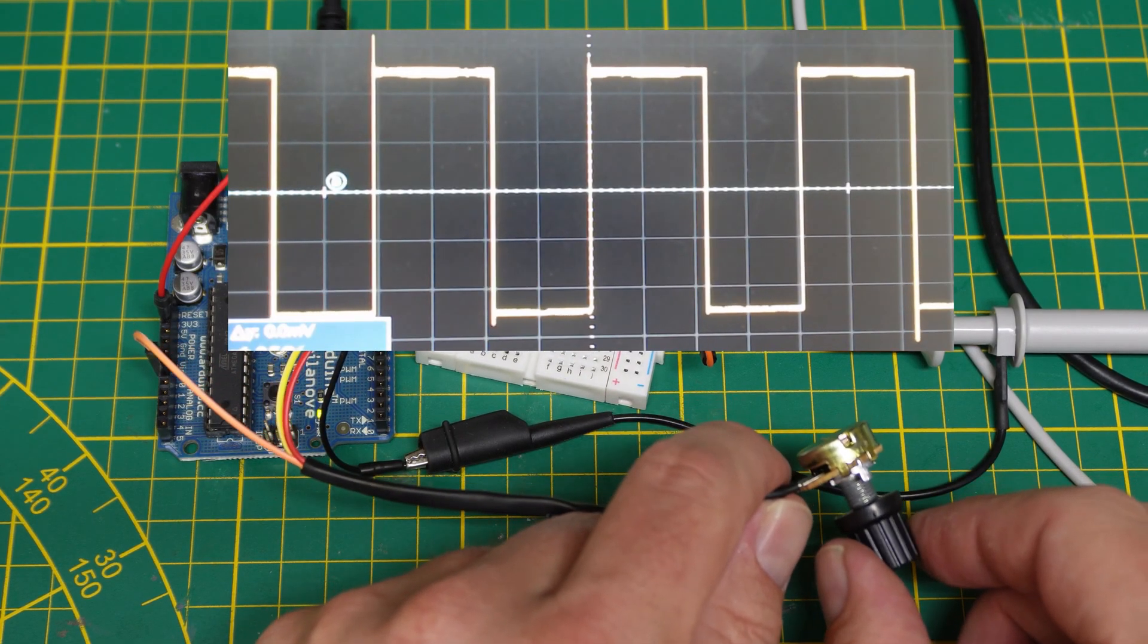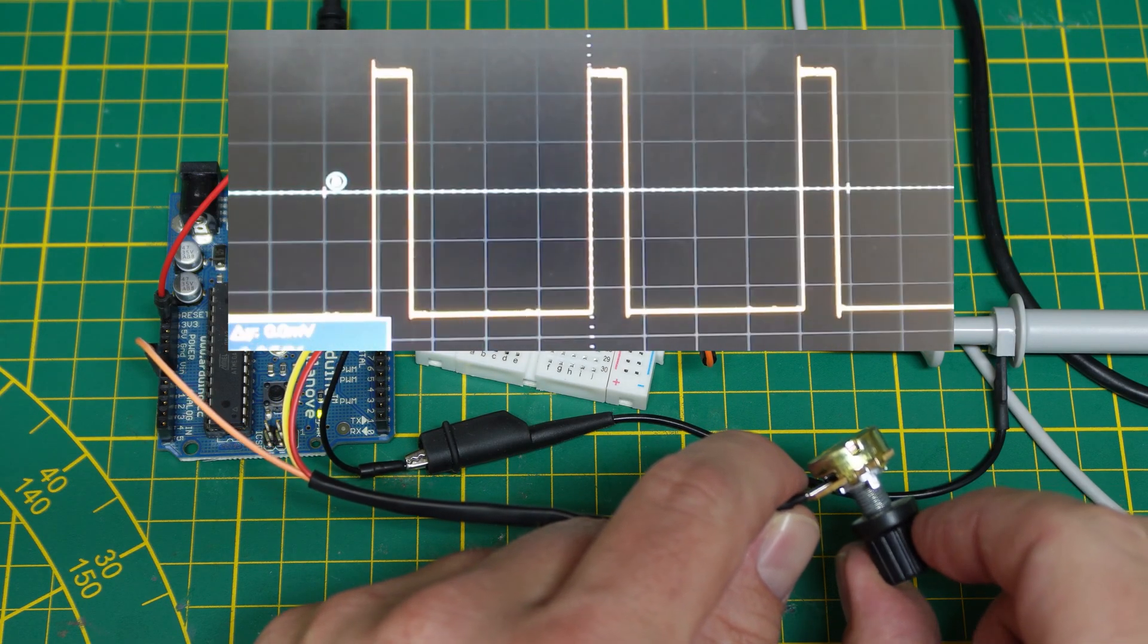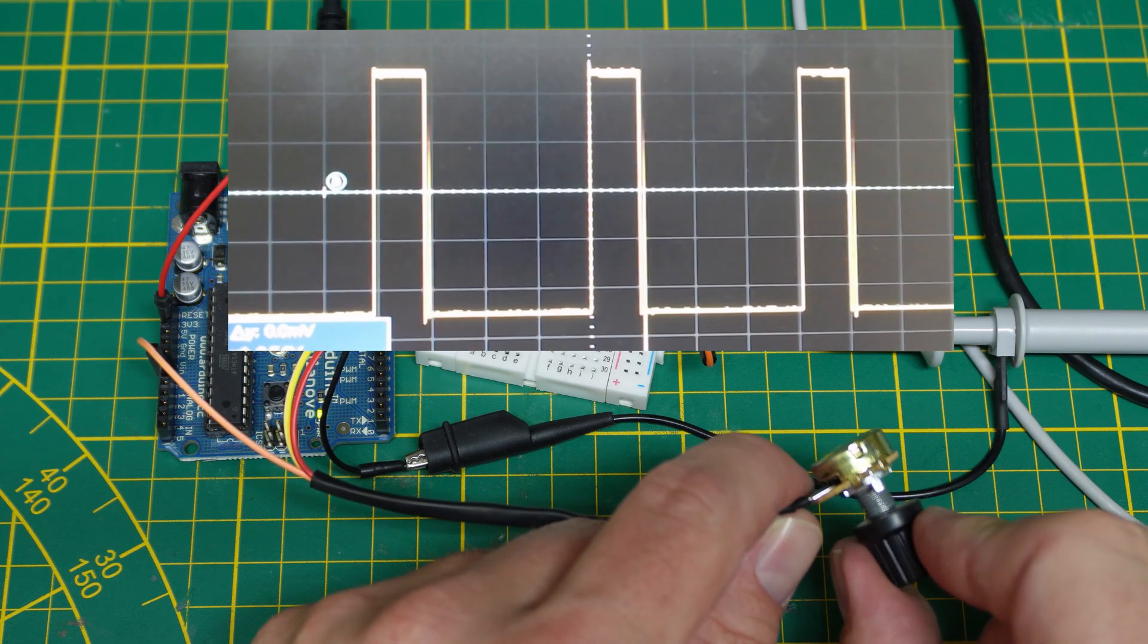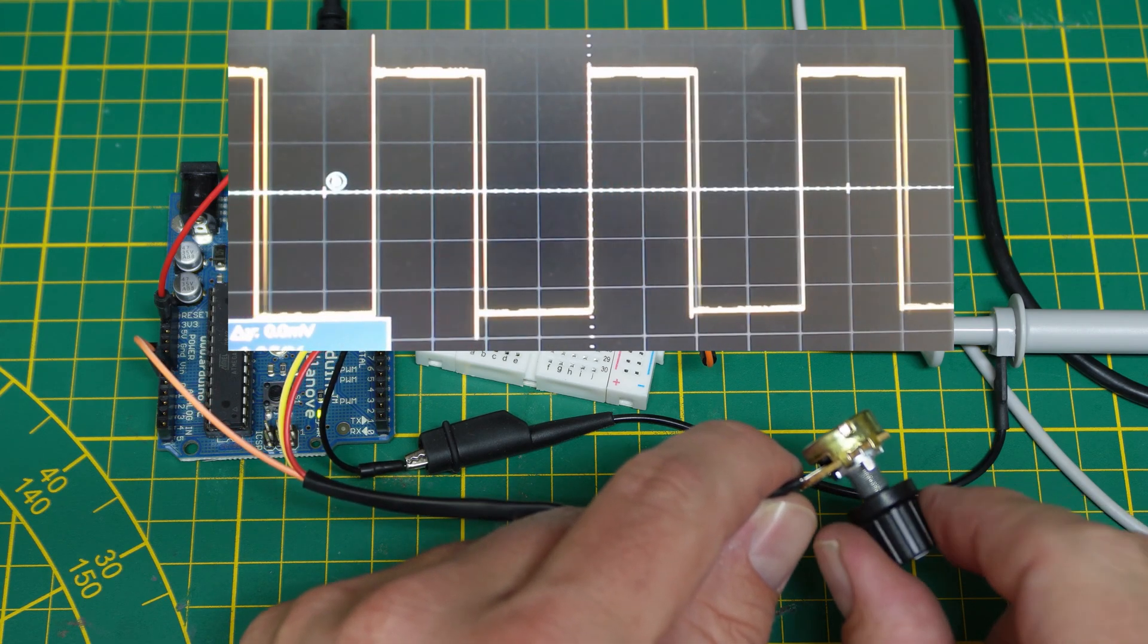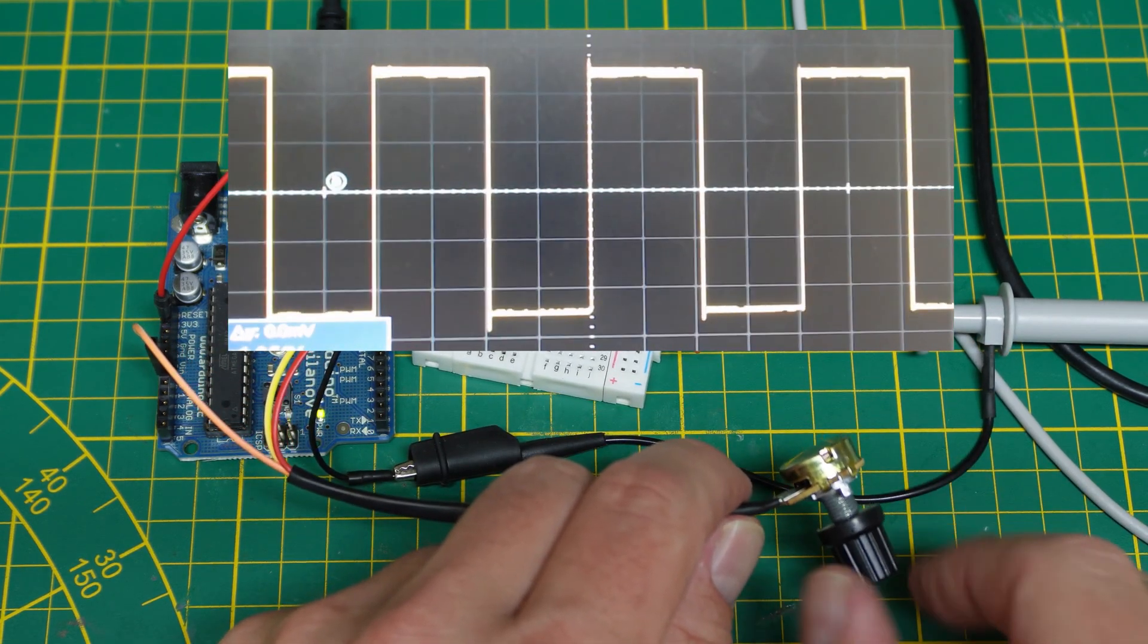This is a close-up of my oscilloscope. When we turn the potentiometer, we can see the duty cycle of the PWM signal change, which is perfect for us. We set it at 50% for now.